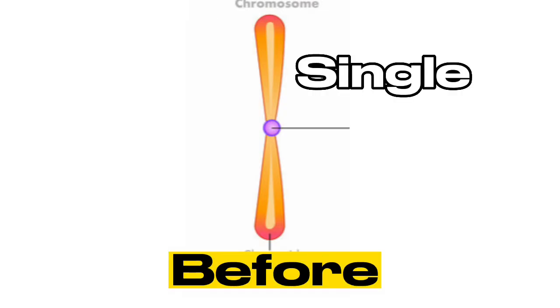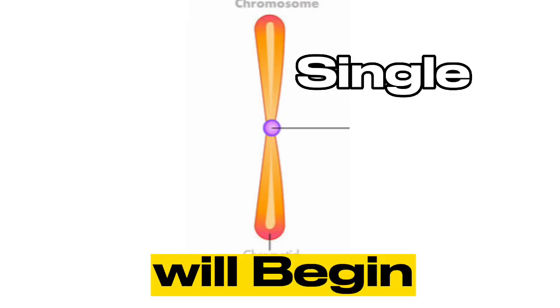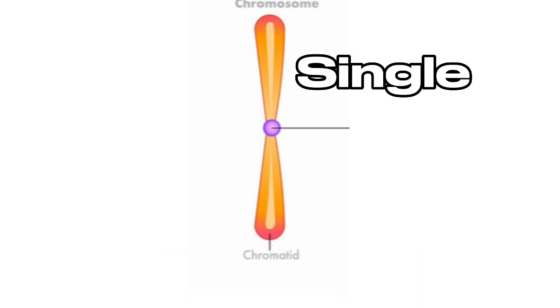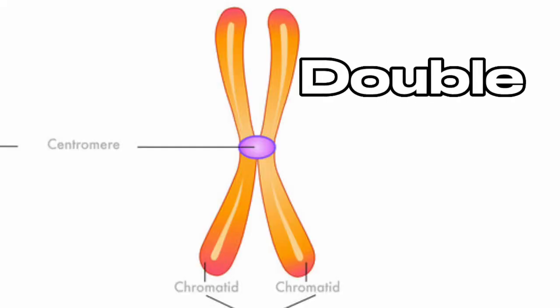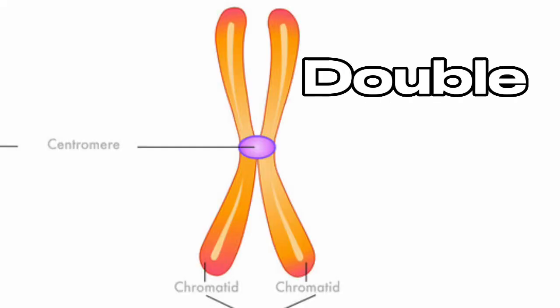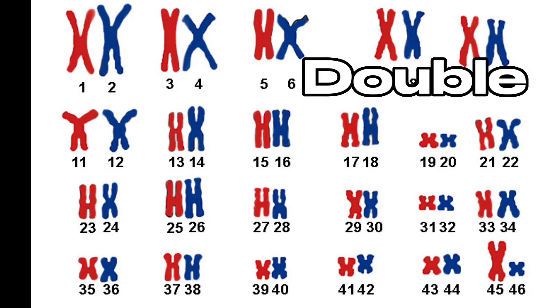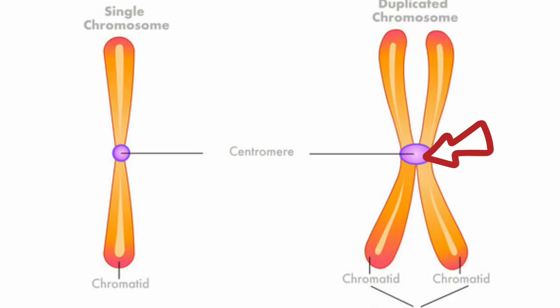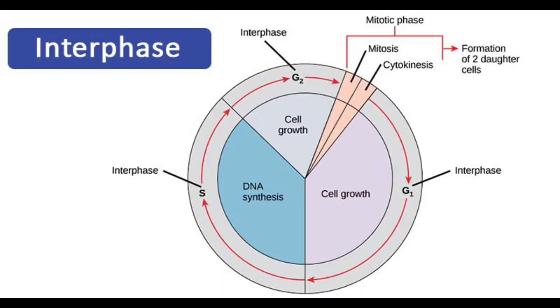But before meiosis begins, genetic material in each of the 46 chromosomes will have to replicate, so that each of the 46 chromosomes will be doubled into two sister chromatids. These two sister chromatids are joined together at a point called the centromere. This occurs at a stage of the cell cycle called the interphase.